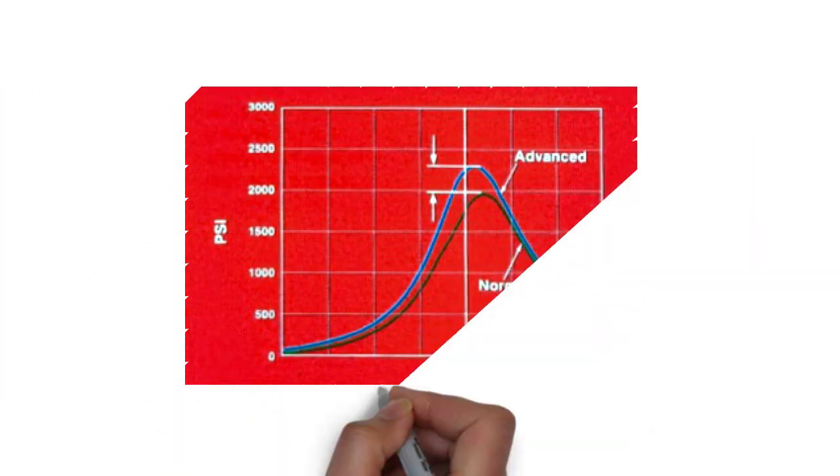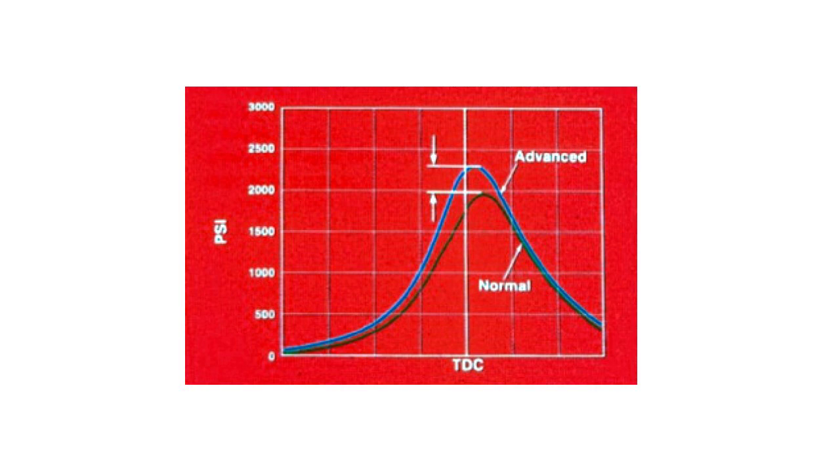Changing the point of peak pressure and the degree of pressure is accomplished with a step timing device. Notice that step timing causes fuel to be injected later than under the same conditions without this device. The peak pressure is lowered, allowing the engine to live longer.